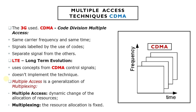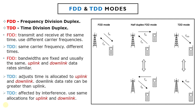LTE uses a few of the concepts from CDMA for some of its control signals, but does not implement the technique otherwise. Multiple access is actually a generalization of a simpler technique known as multiplexing. The difference between the two is that a multiple access system can dynamically change the allocation of resources to different mobiles, while in a multiplexing system the resource allocation is fixed.